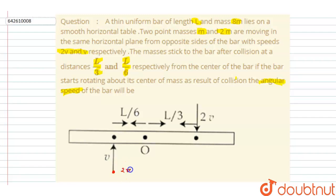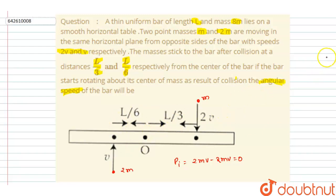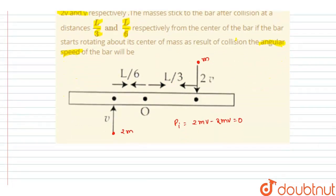The particle of mass 2m has velocity v and the particle of mass m has velocity 2v. The initial momentum is 2mv minus 2mv, which equals 0. So finally the system won't have any linear velocity, since the initial momentum is 0 and that equals the final momentum, which is also 0.